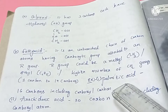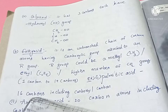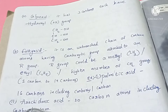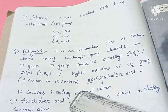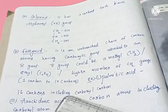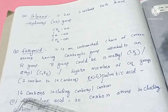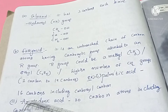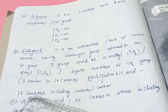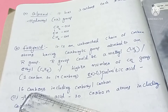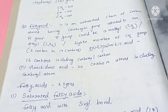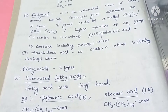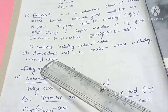Fatty acid examples: palmitic acid has 16 carbons, including the carboxyl group — so excluding the carboxyl carbon, there are 15 carbons. Next example: arachidonic acid has 20 carbons, including the carboxyl group.